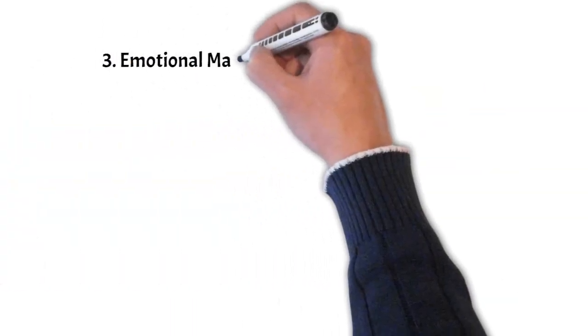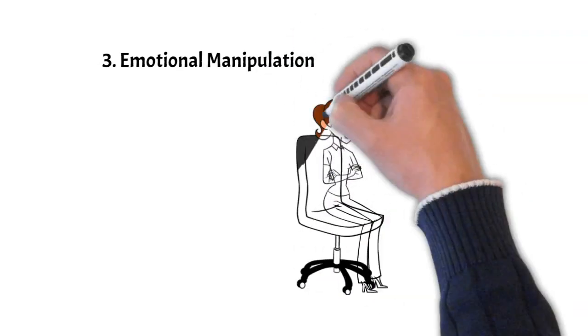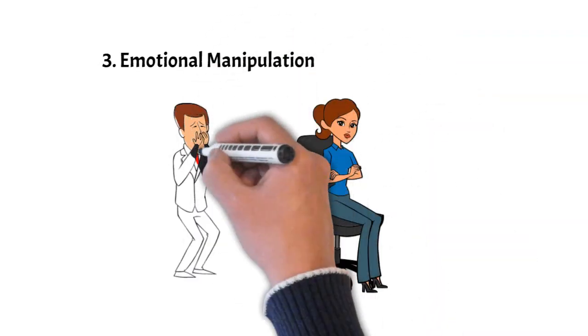Number three, emotional manipulation. In their desire to be needed, they might guilt trip or play the victim, making others feel indebted or obligated to them.